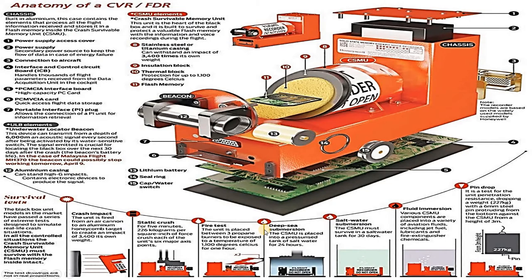Moving forward, here is a complete picture of the cockpit voice recorder and flight data recorder. We are having a chassis — this is the chassis of the flight data recorder — and a power supply unit. This is the power supply access cover and the power supply unit. This is the beacon, the underwater locator beacon. This is the CSMU. The CSMU provides access for memory recording, meaning the memory card is inserted in this CSMU — just like a mobile memory card which records data on a mobile phone. So flight data is being recorded in the CSMU, which is called the crash survival memory unit.